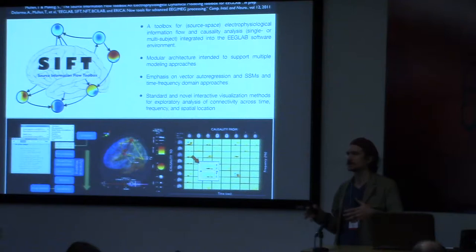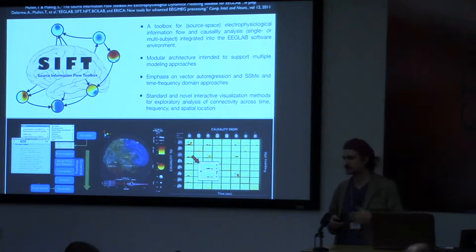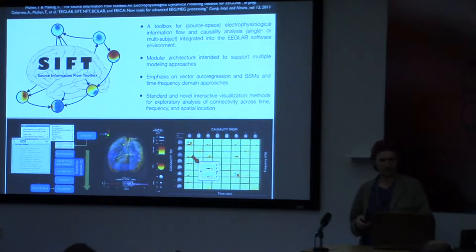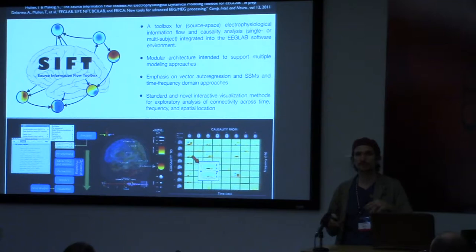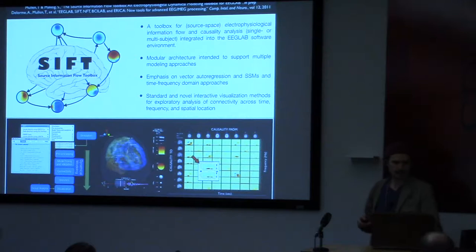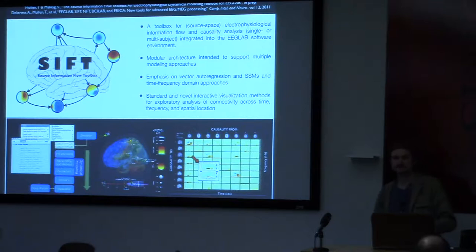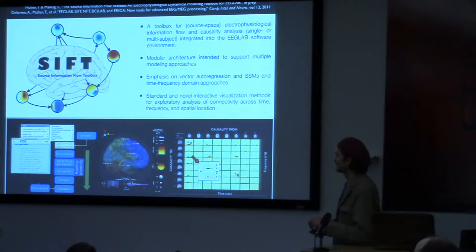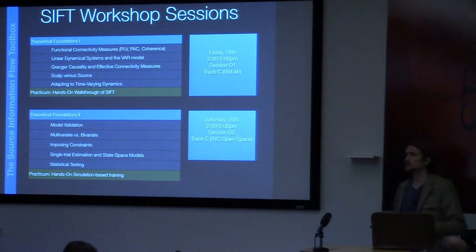SIFT is designed for modeling things like functional connectivity and Granger causality, looking at statistics across subject populations and trials to get at network dynamics in the brain. It has a modular architecture designed to support different modeling approaches. There's an emphasis on techniques like vector autoregression and state space modeling, along with several novel approaches for visualizing network dynamics across time, frequency, and space.